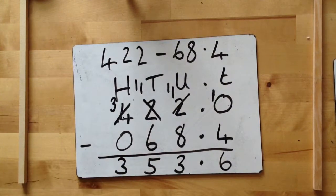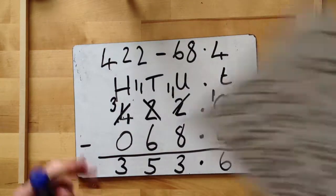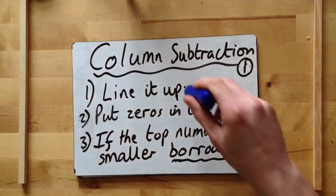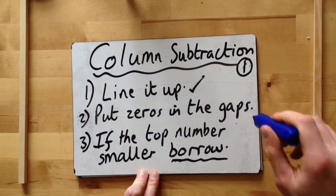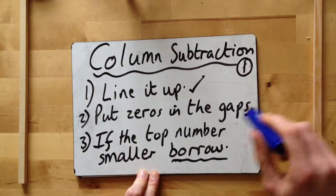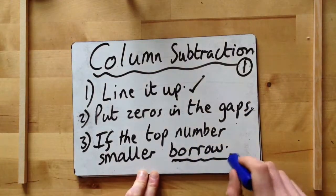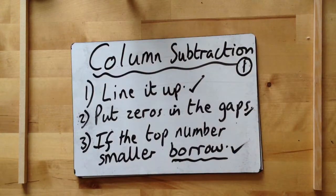Which gives us the answer, 353.6. So just to reiterate those rules: line it up, so important. Put zeros in the gaps, must, must, must do that. If the top number is smaller, then you must borrow. The top number is smaller. Okay, thank you.